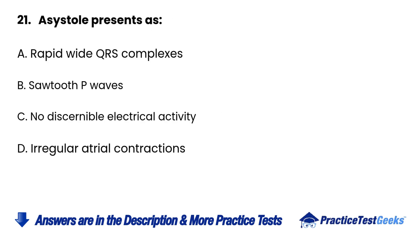21. Asystole presents as: A. Rapid wide QRS complexes. B. Sawtooth P waves. C. No discernible electrical activity. D. Irregular atrial contractions.